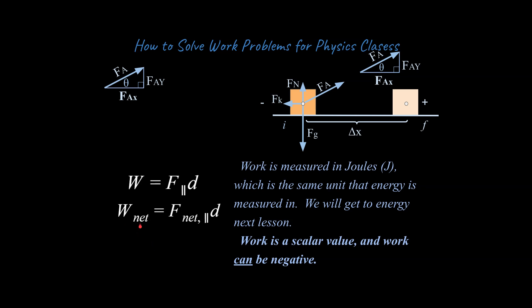If we have subscripts that coincide with whatever it is we're talking about, we can just add subscripts. Like if we're going to talk about the net work, then we just sub in a net subscript for the force. And this would hold true. If we're going to do this for the work that the kinetic friction force does, we would say W_friction_k is equal to F_k times displacement, and that equation would hold true as well.